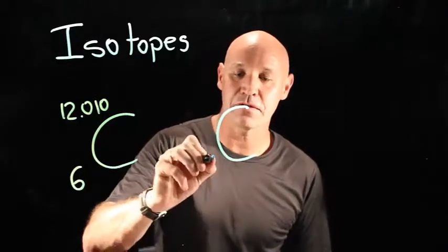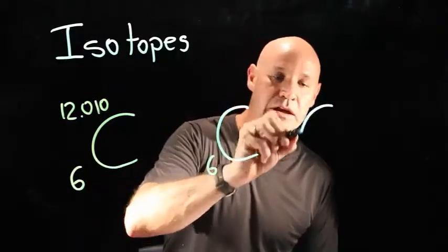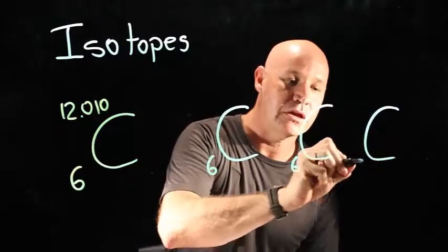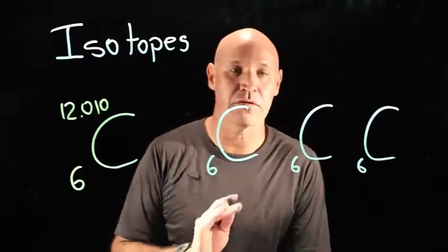We have three different types of carbon. Obviously, they all have 6 protons. If they didn't have 6 protons, then they wouldn't be carbon.